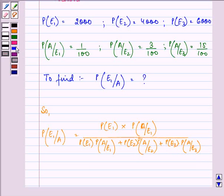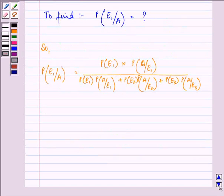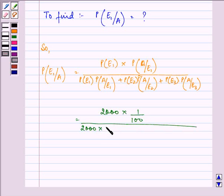Now on substituting the values, we have 2000 into 1 upon 100 divided by 2000 into 1 upon 100 plus 4000 into 3 upon 100 plus 6000 into 15 upon 100.